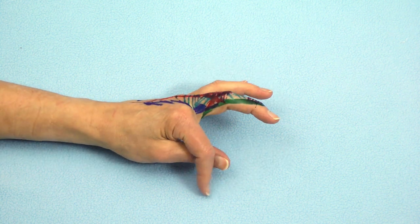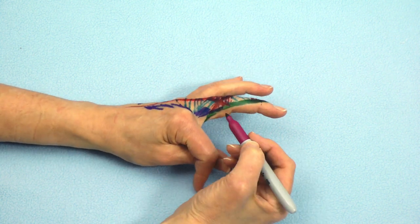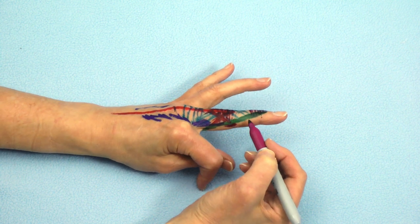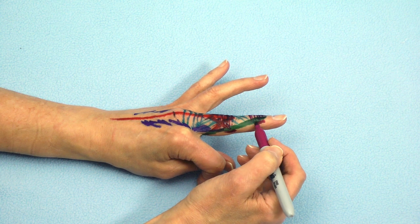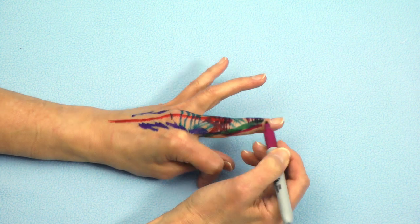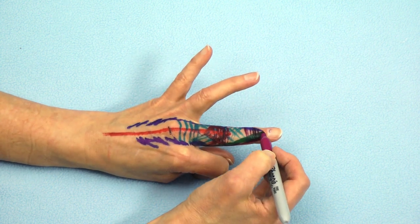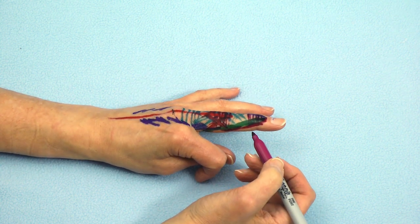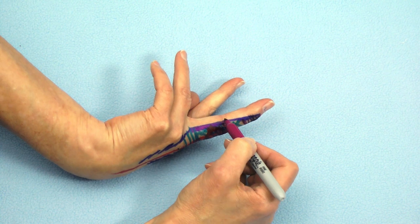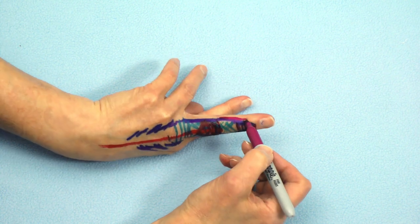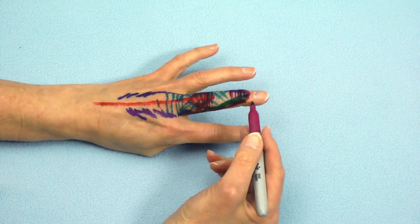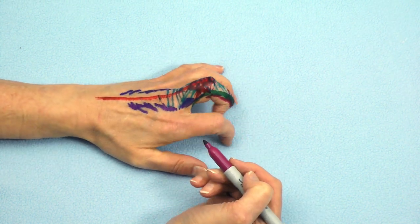Finally, there's one additional structure called the oblique retinacular ligament that runs from the volar aspect of the PIP joint obliquely parallel and with the lateral band, and inserts along with the terminal tendon insertion. This oblique retinacular ligament occurs on both sides of the finger. And its purpose is to coordinate motion between the PIP and DIP joint.